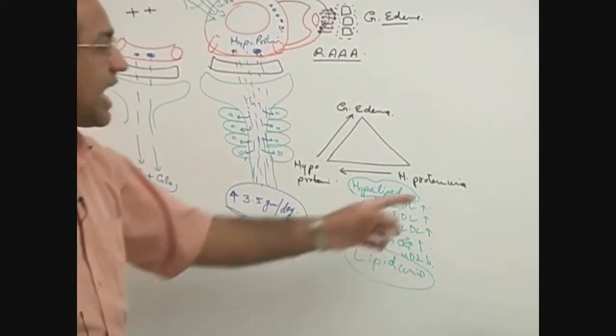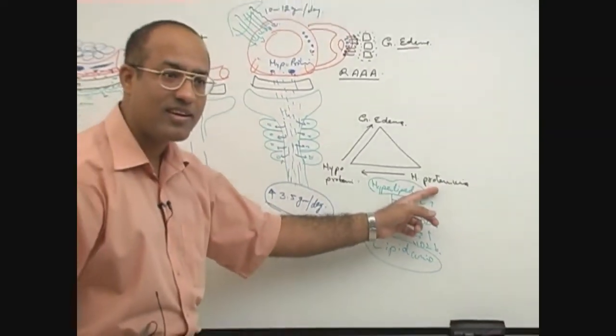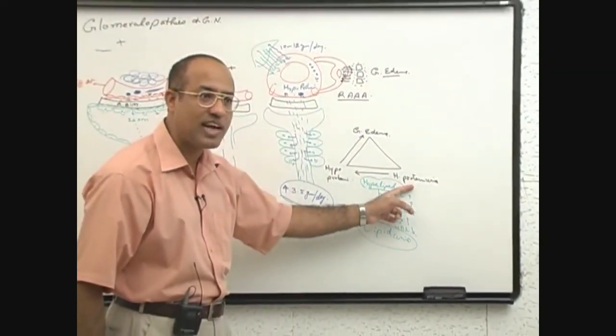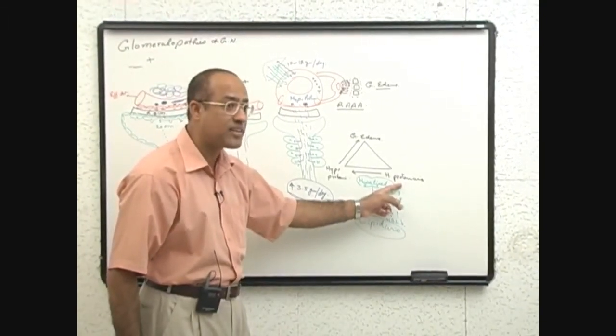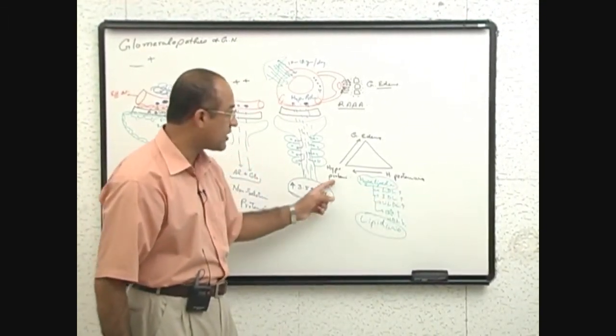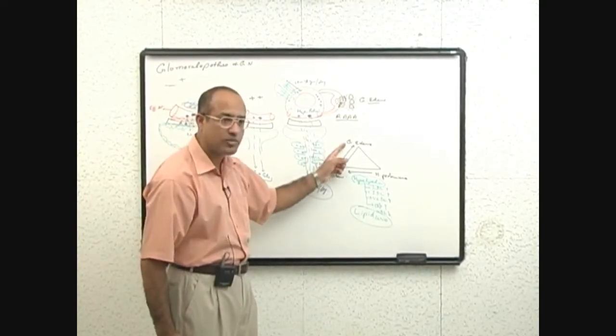So the primary problem was just heavy protein losses, so heavy that liver could not maintain the plasma protein levels, resulting into hypoproteinemia, leading to generalized edema.